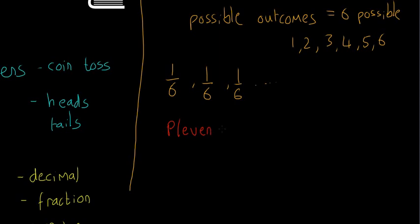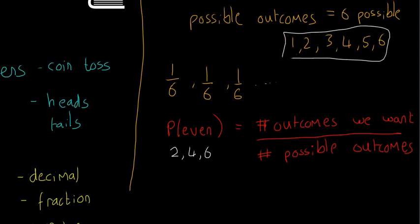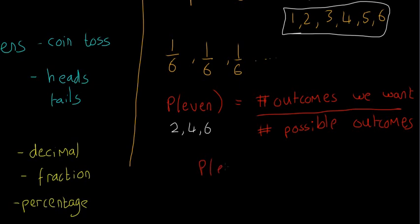The probability of getting an even number: using the formula, the number of possible outcomes is six. The outcomes we want — even numbers from a dice — are two, four, and six. So there are three outcomes we want. P of even equals three over six, which equals one half. By the same logic, the probability of getting an odd number is also one half.